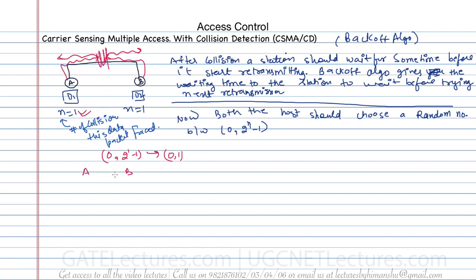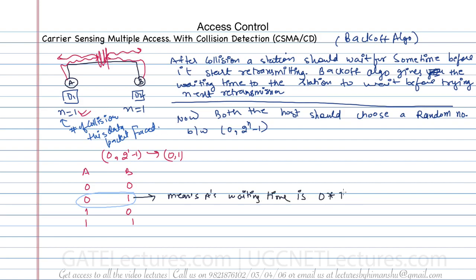Assuming this is A and this is B. The possibilities are: A can choose 0, B can choose 0; A can choose 0, B can choose 1; A can choose 1, B can choose 0; A can choose 1, B can choose 1. When A chooses 0 and B chooses 1, A's waiting time is 0 into T time slots (equal to 0) and B's waiting time is 1 into T slots. So both A and B would retransmit immediately if both choose 0, and we are again going to have a collision.